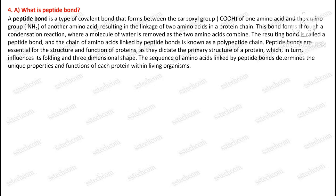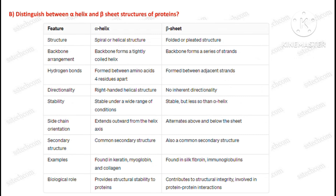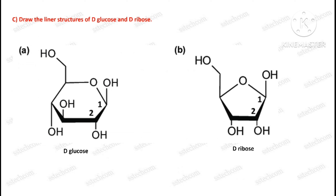Question number four, first part: what is a peptide bond? Second part: distinguish between alpha helix and beta sheet structures of proteins. Third part: draw the linear structures of D-glucose and D-ribose.